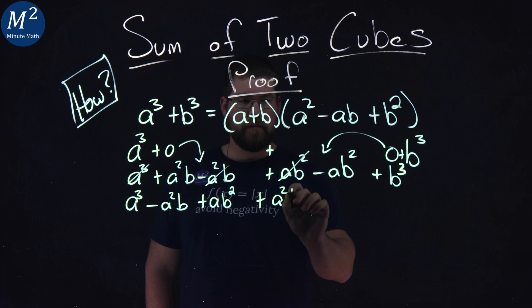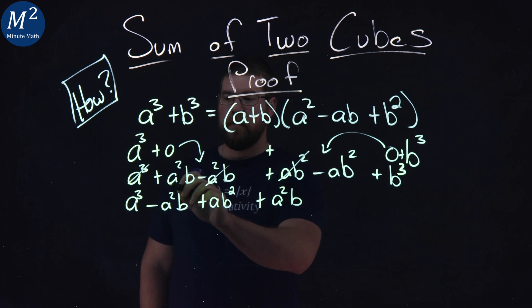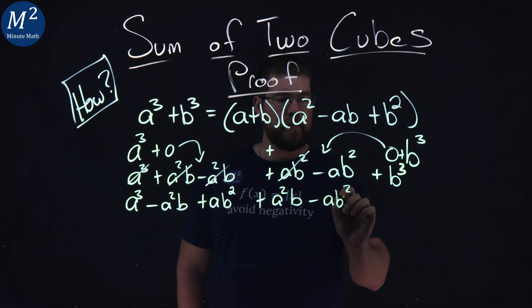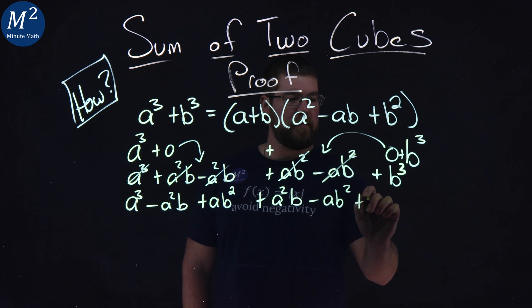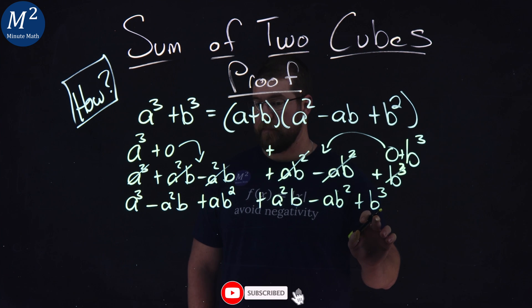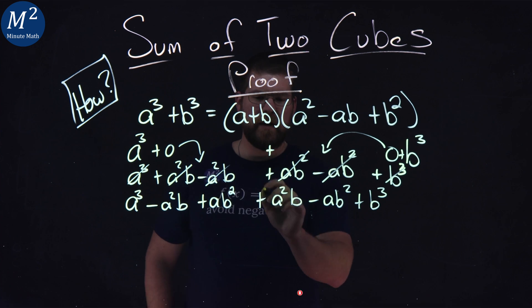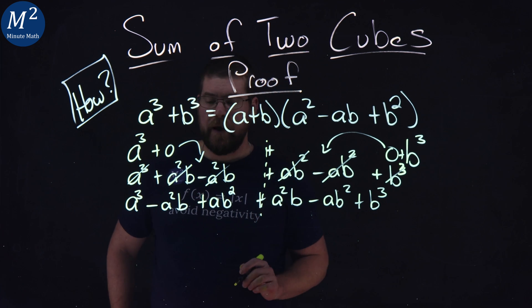Now I'm going to bring over this a squared b right there, cross that off, minus ab squared, got that here, plus b cubed right there, brought that one down. All right, now we kind of have two sections here, the left and right, and we've always had that. Let's kind of separate that.